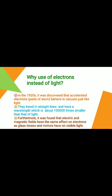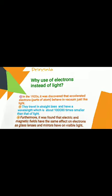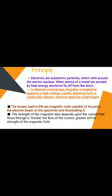A question arises: what is the need for using electrons instead of light? In the 1920s, it was discovered that accelerated electrons — which are part of the atom — behave in a vacuum just like light: they travel in straight lines and have a wavelength about 100,000 times smaller than that of light. Furthermore, electric and magnetic fields have the same effect on electrons as glass lenses and mirrors have on visible light.